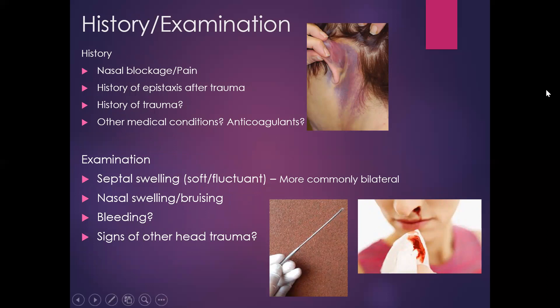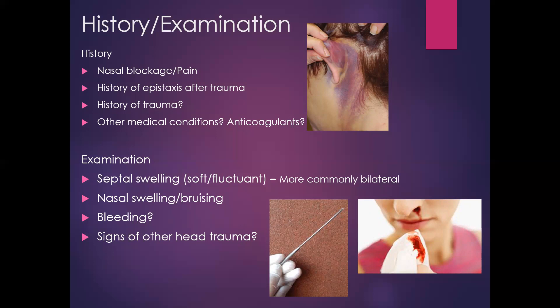In terms of the history: with trauma being the main factor, it's important to ask about events preceding the presentation, and whether there are symptoms or signs elsewhere in the body, as the patient may have sustained other injuries to the head and neck. The patient may present immediately with nasal blockage or pain, and may have had an episode of epistaxis following the traumatic episode. Ask about medical conditions and medications that can exacerbate bleeding or may have contributed to it.